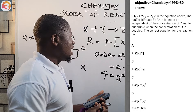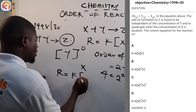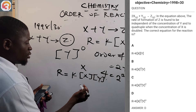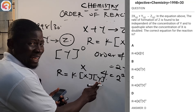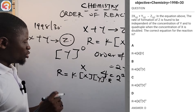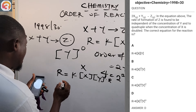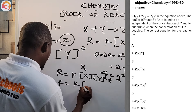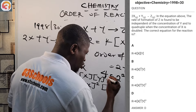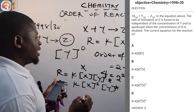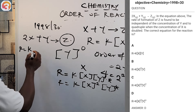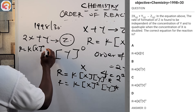They also say the rate quadruples when the concentration of x is doubled. Quadruple means four times. So when [x] is doubled (multiplied by 2), the rate increases by a factor of 4, which is 2². This means [x] is raised to the power of 2 in the rate equation.